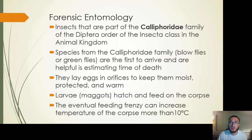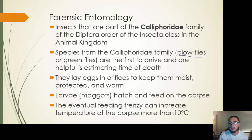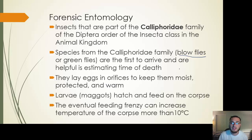Insects that are part of the Calliphoridae family of the Diptera order are a major part of forensic entomology and creating a timeline. One specific species we're going to look at are blowflies — sometimes called green flies. They're the first to arrive and they're helpful in estimating time of death, specifically when death was rather recent. They lay their eggs in orifices to keep them moist, protected, and warm — in the mouth, near the anus, genital regions, armpits, anywhere that's going to be moist.